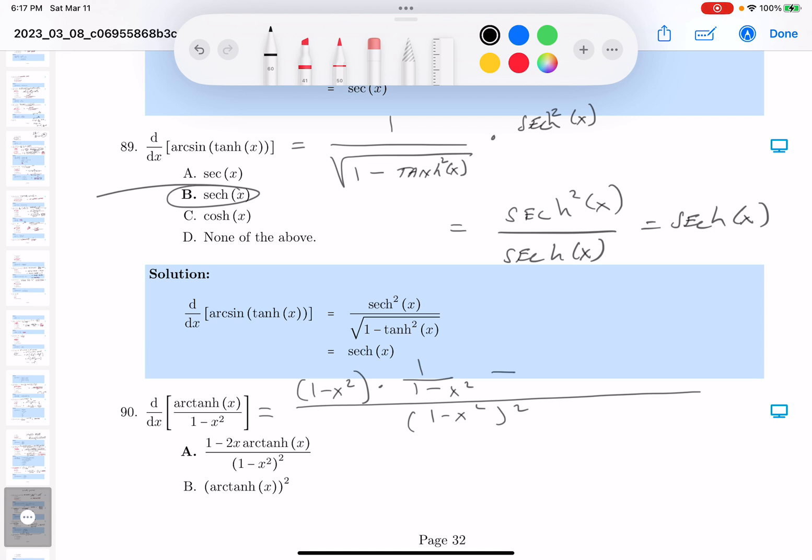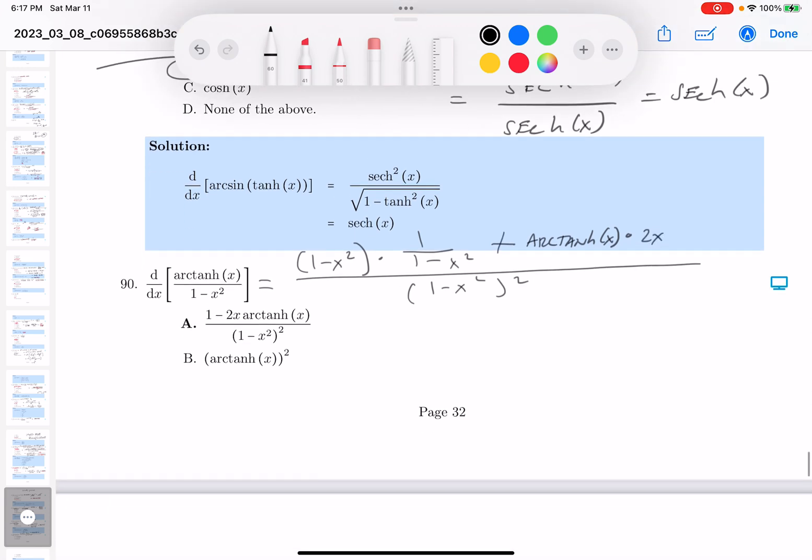Let's see. Minus the top, which is arc hyperbolic tangent of x times the derivative of the bottom, which could be minus 2x. Let's put this over here, put a 2x there. All right. So I think I'm good to go.